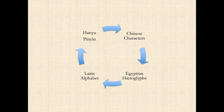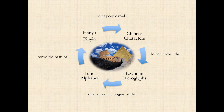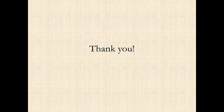And so, at the beginning the question was: how do these things relate? Chinese characters helped unlock the hieroglyphs through the work of Champollion. The hieroglyphs help explain the origin of the Latin alphabet. And the Latin alphabet forms the basis of Hanyupinyin, which helps people read Chinese characters. And so there is a link. Thank you very much, and I hope you enjoyed this presentation. Have a good day.